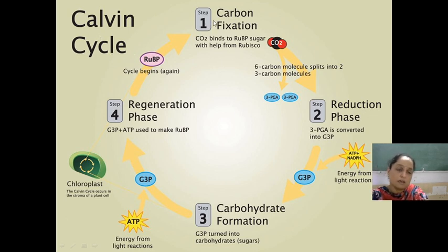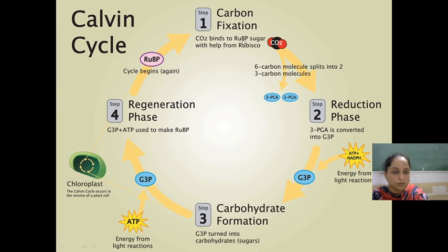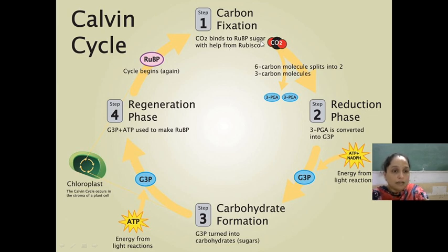We are going to start with carbon fixation as our first step. CO2 binds with RUBP — ribulose bisphosphate — which is a 5-carbon sugar. This is done with the help of the enzyme Rubisco. The 5-carbon sugar will bind with CO2, converting it into a 6-carbon sugar, which then divides into two 3-carbon sugars.